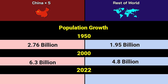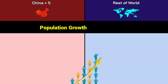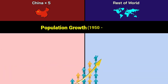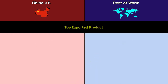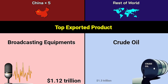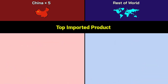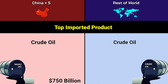2022: China 7.2 billion, Rest of World 6.51 billion. Population growth between 1950 to 2022: China 261%, Rest of World 334%. Top exported product: China — broadcasting equipment 1.12 trillion dollars; Rest of World — crude oil 1.3 trillion dollars. Top imported product: China — crude oil 750 billion dollars; Rest of World — crude oil 1.15 trillion dollars.